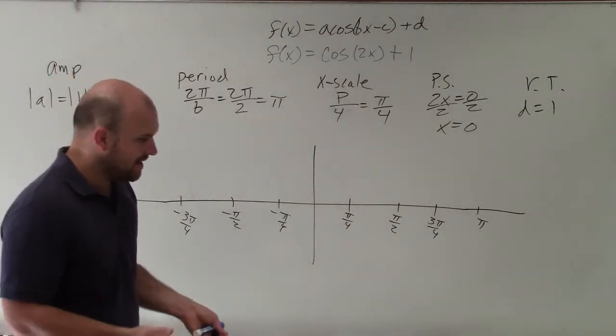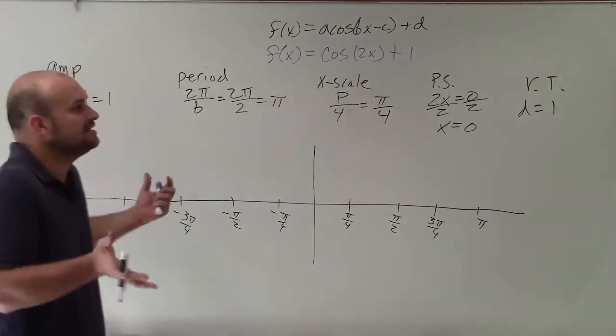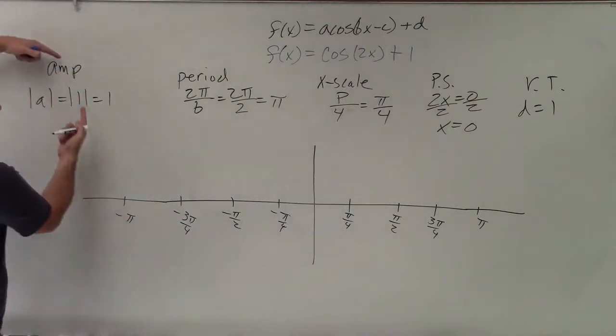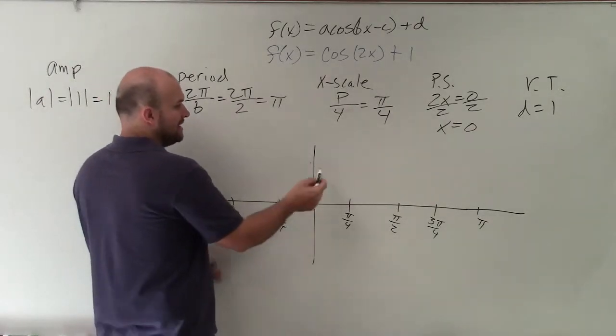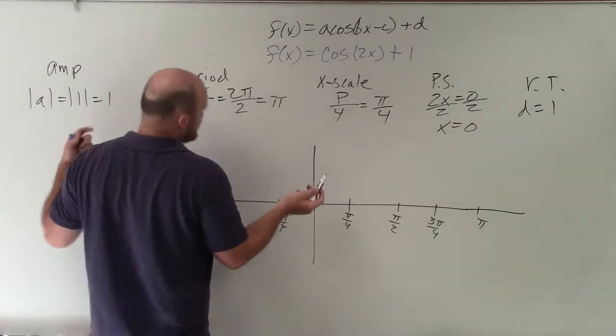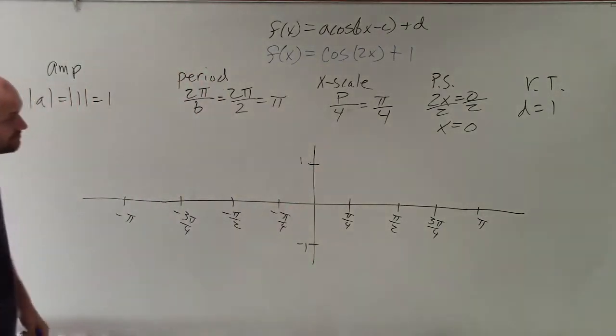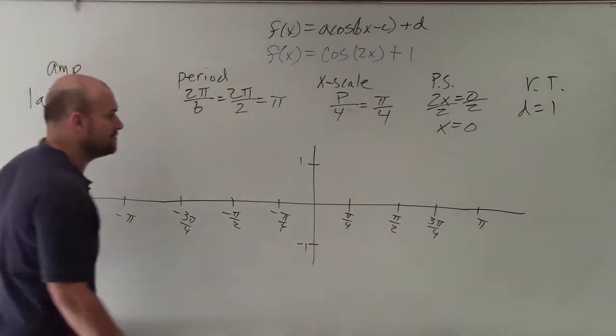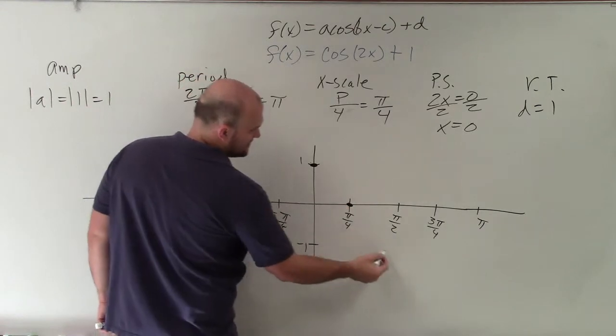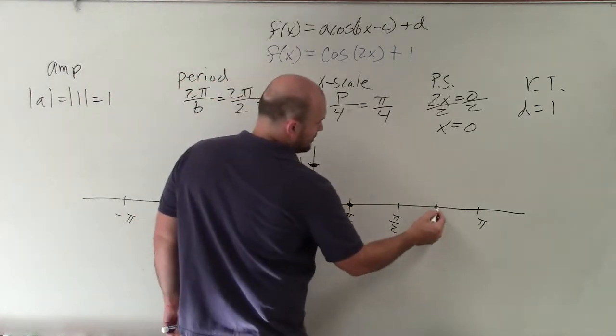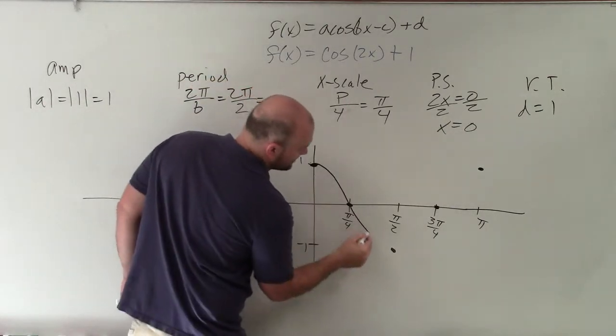Remember that the cosine graph, when we look at the initial period, starts at its maximum. So we need to determine, well, what is the maximum? We look at the amplitude, because the amplitude is the half distance from the max to the min. Since my amplitude is 1, that's the same as the parent graph. That's going to go up 1 and down to negative 1. Now that's all the information I have. I start at my maximum for cosine. The next one is I go to my intercept, minimum, intercept, maximum. Therefore, my graph is going to look something like this.